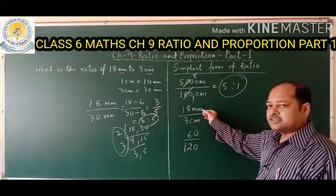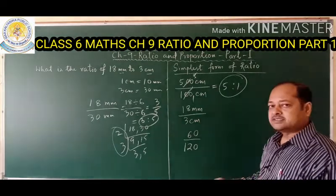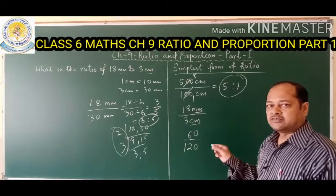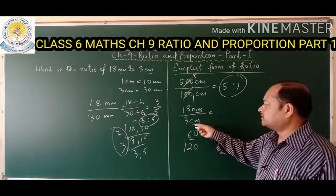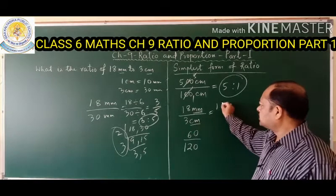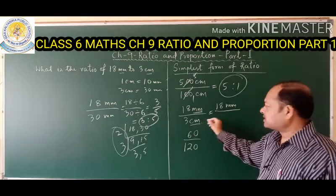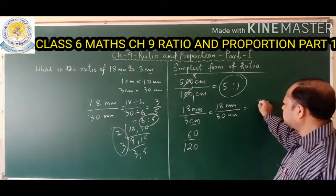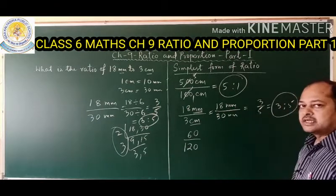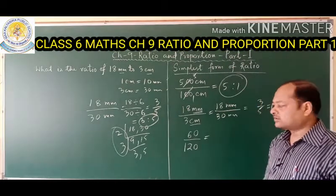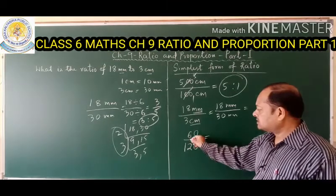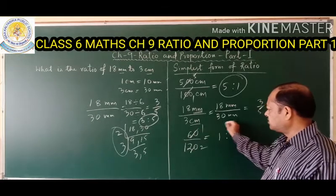For 18 millimeters to 3 centimeters: the first step is to convert to the same unit, since the numerator is in millimeters and denominator in centimeters. Multiplying centimeters by 10 gives 30 millimeters, so the ratio is 18 by 30, which simplifies to 3 is to 5. For 60 upon 120, the HCF is 60, so dividing both gives the ratio 1 is to 2.